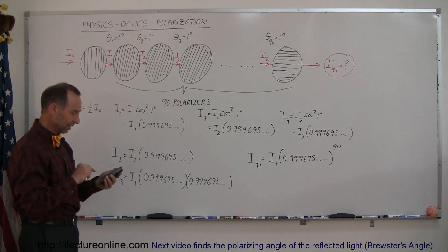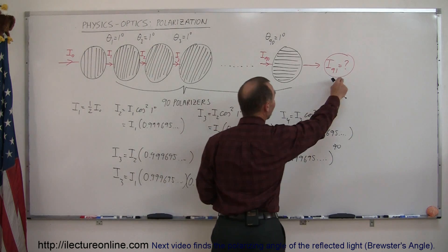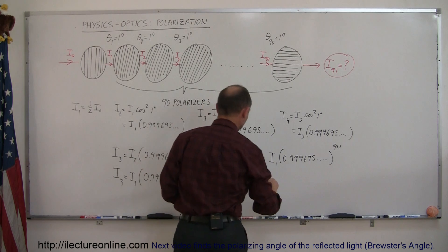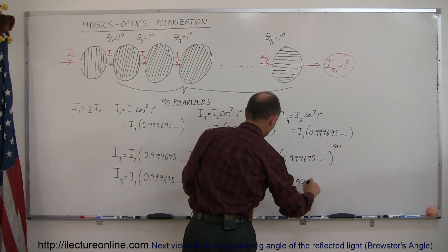Good thing we have calculators these days. That would be a tough thing to do in a slide rule. And so what that means is that i 91, the light coming out at the very end of the 90th polarizer after it's passed through the first polarizer, is equal to i sub 1 times 0.973.